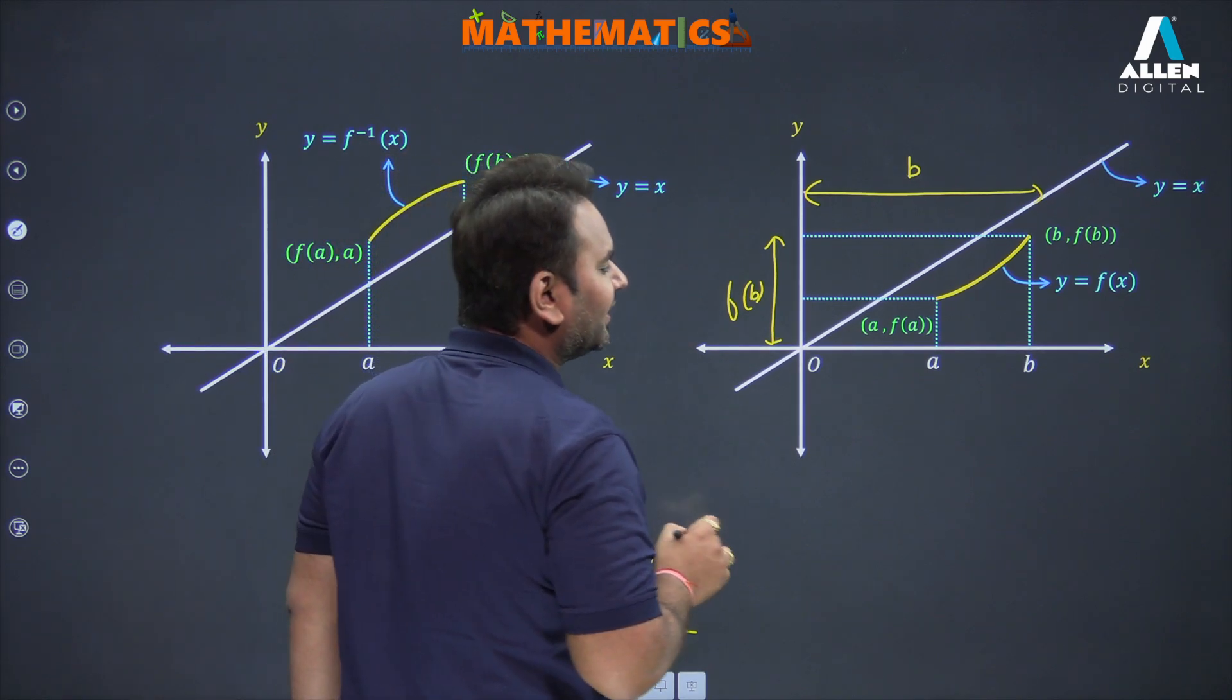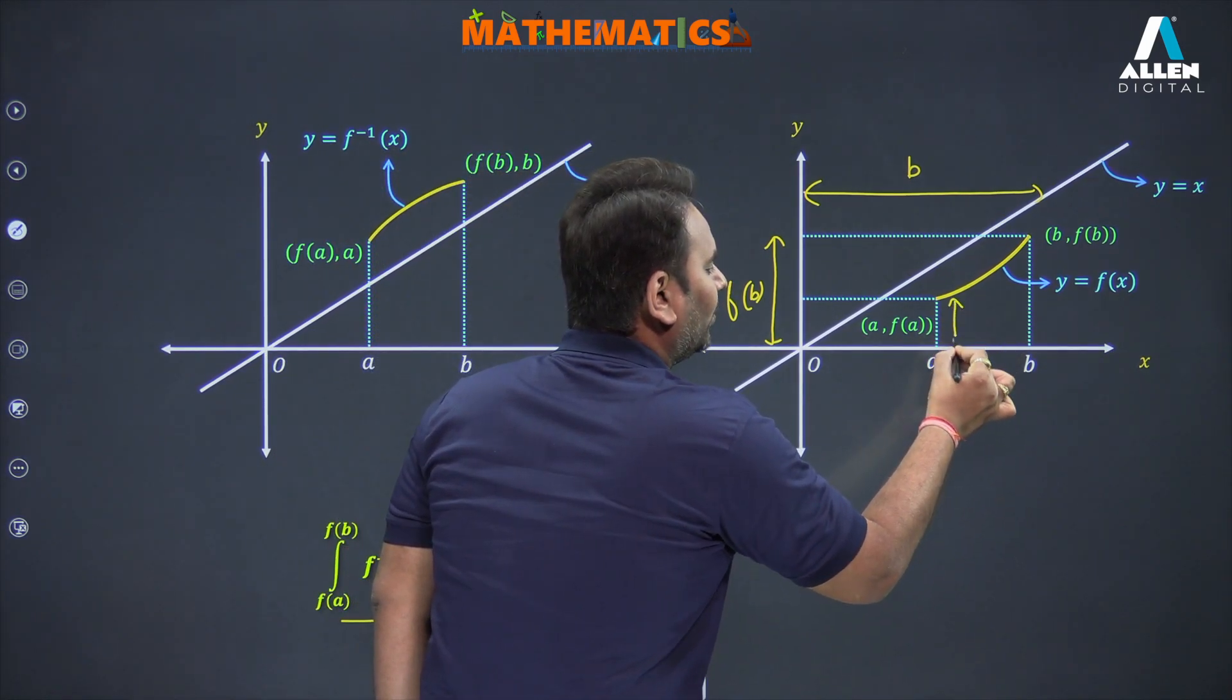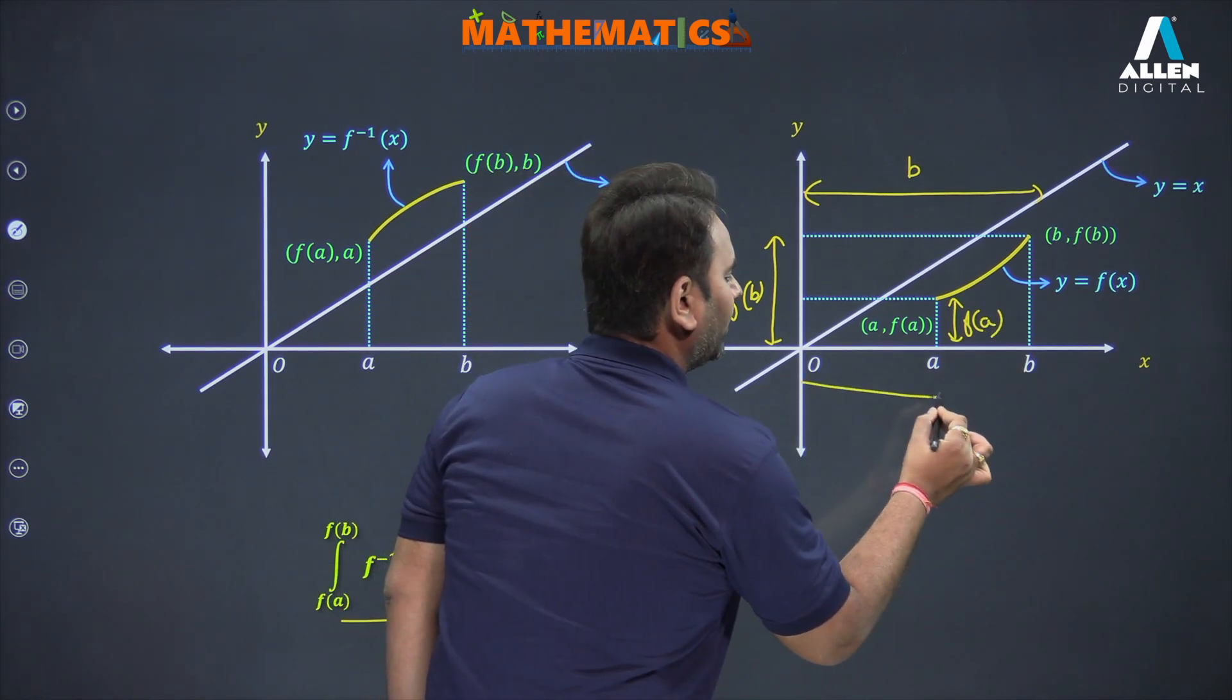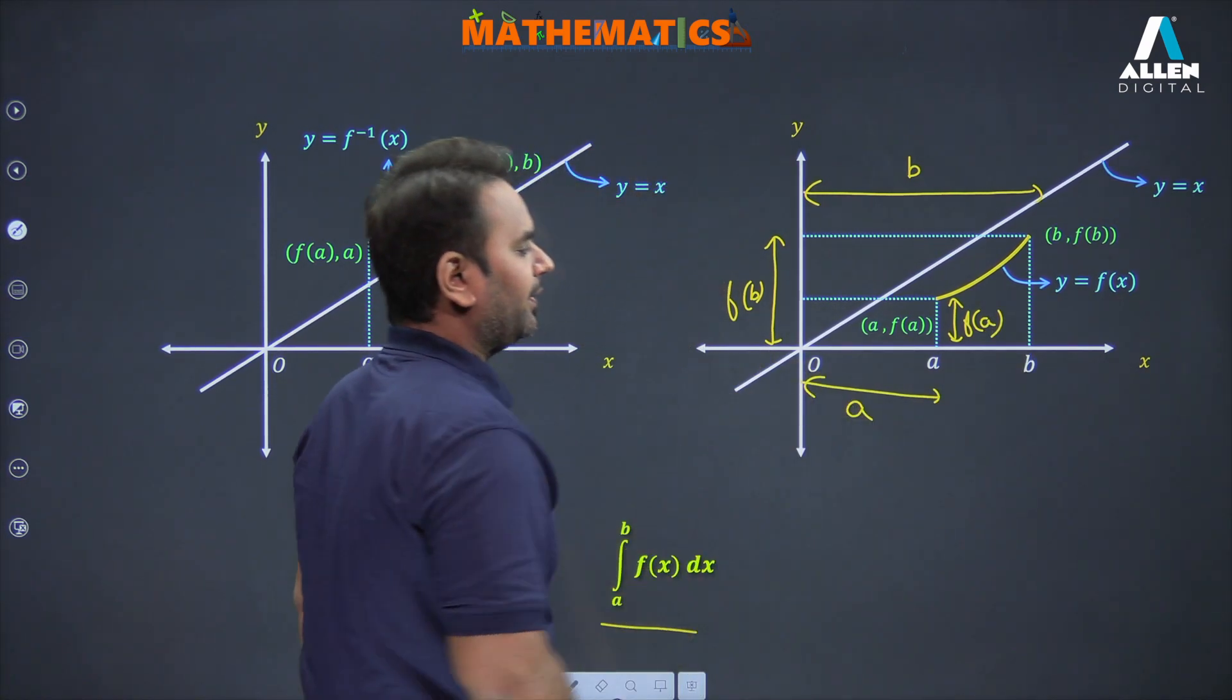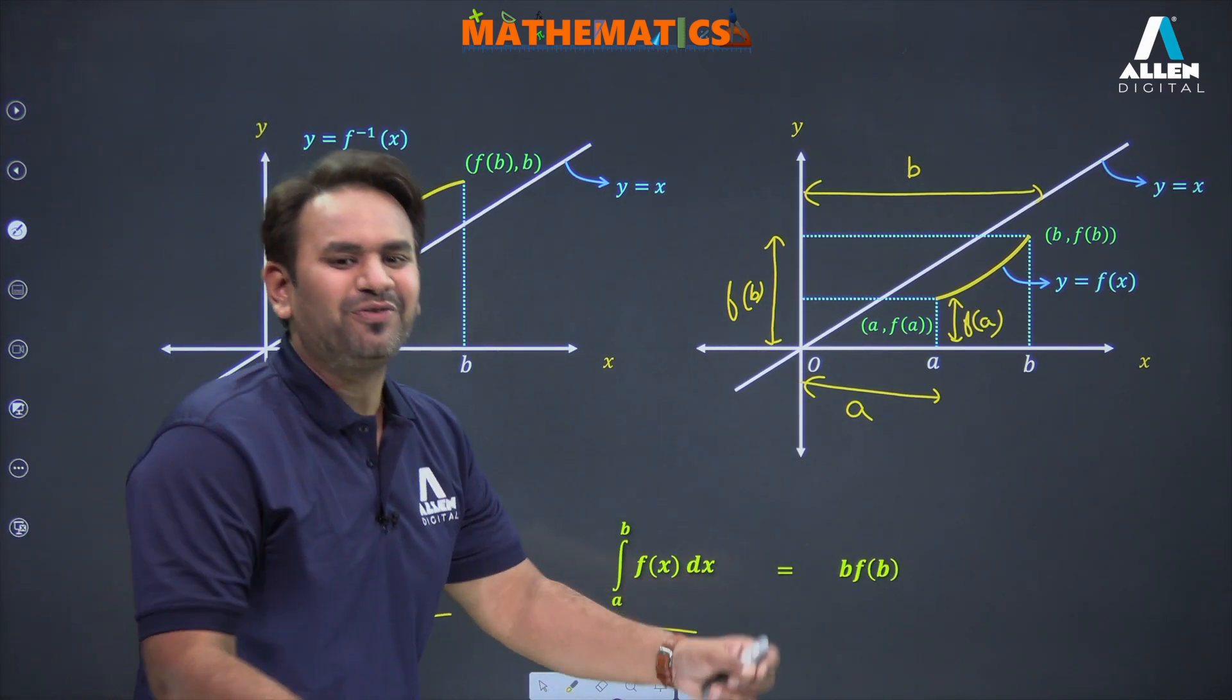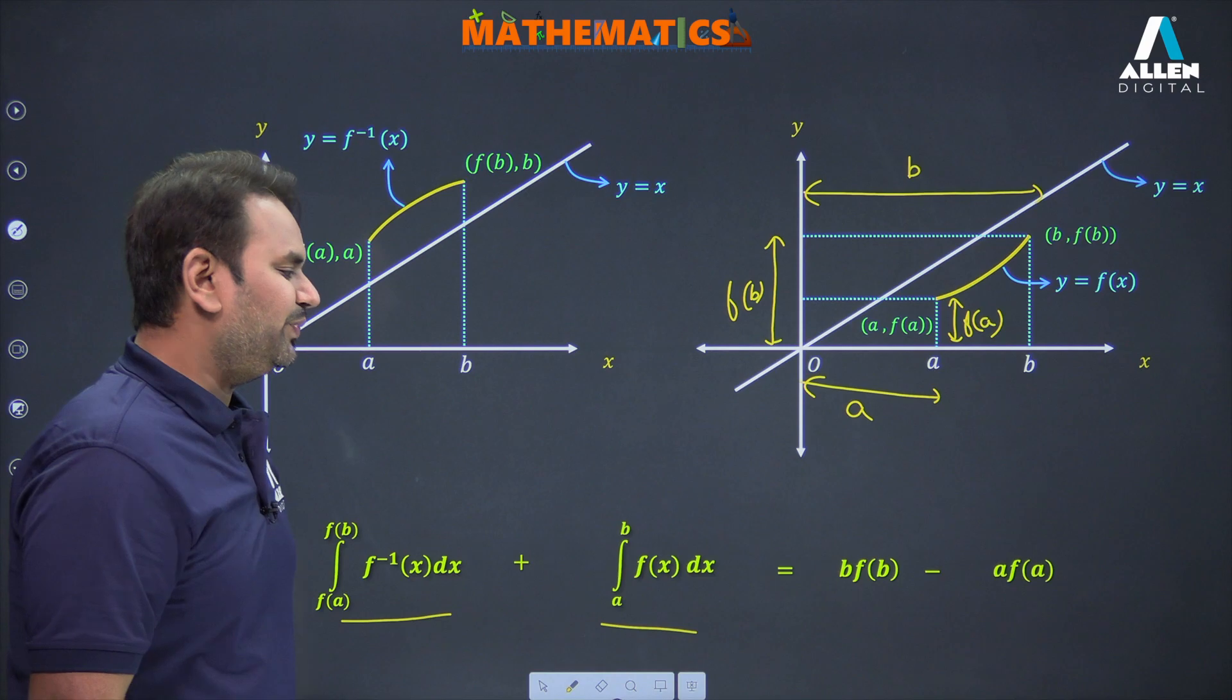For the smaller rectangle, its height will be f(a), and its length will be a. So my final answer will be b times f(b) minus a times f(a).